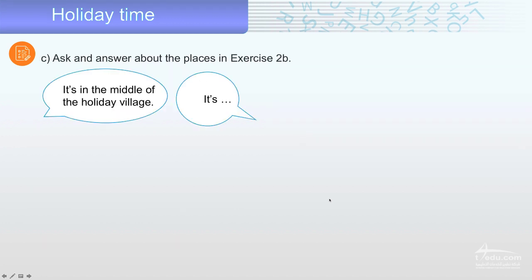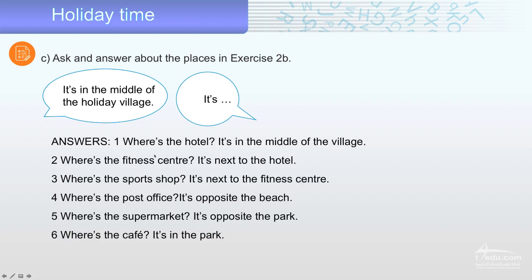So, ask and answer with your friend, with a member of your family, and use these words. For example, where is the hotel? It is in the middle of the village. Two, where is the fitness center? It's next to the hotel. Number three, where is the sports shop? It's next to the fitness center. Four, where is the post office? It's opposite the beach. Number five, where is the supermarket? It's opposite the park. Six, where is the cafe? It's in the park.